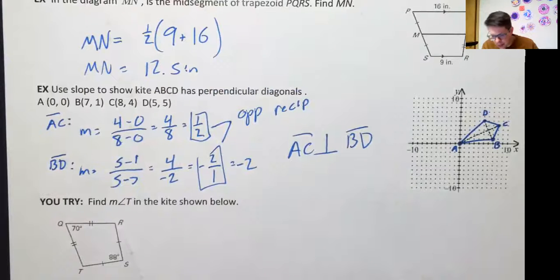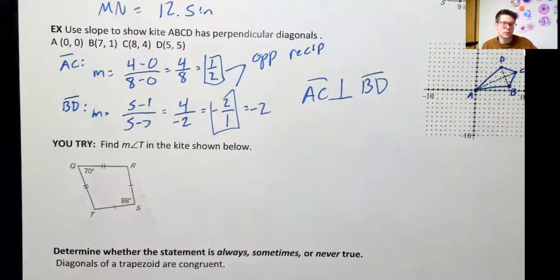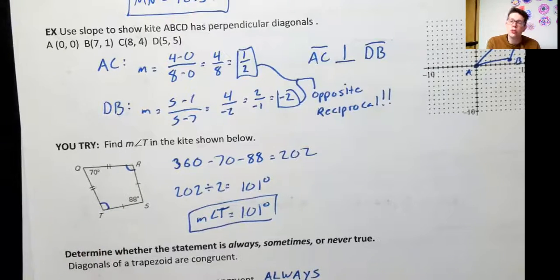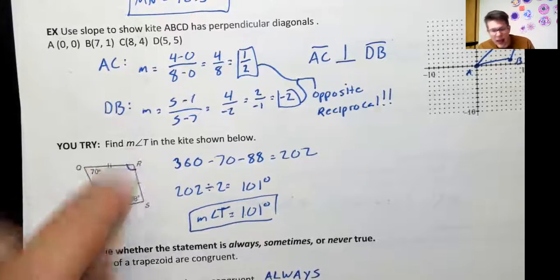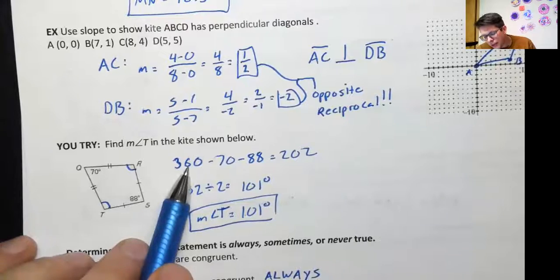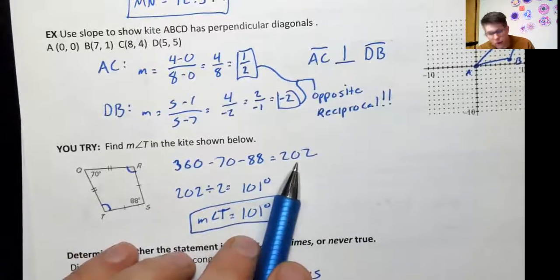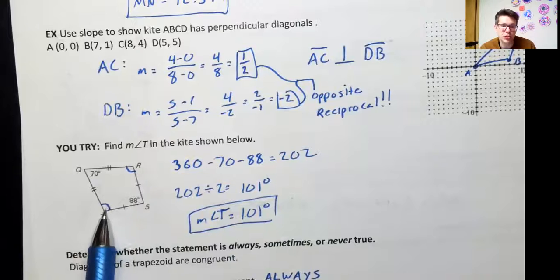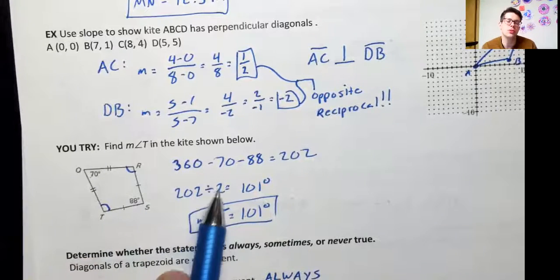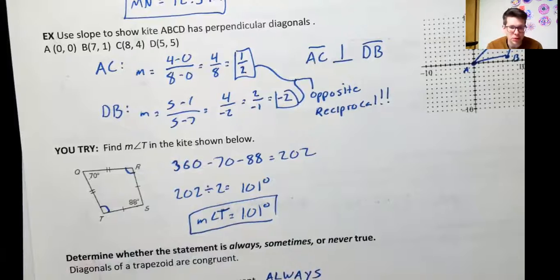For the you-try problem, find the measure of angle T in the kite. T and R are the matching pair of congruent opposite angles in the kite. All four angles must add up to 360 degrees. Starting with 360 and subtracting the two known angles of 70 and 88 gives 202. Since T and R are equal, we divide 202 by 2, giving angle T = 101 degrees.